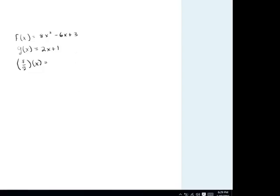Hello, welcome to the video on how to divide f of x divided by g of x. Now, it sort of looks like this: 8x squared minus 6x plus 3 over 2x plus 1. That's how it's going to look like if it's written down for you.